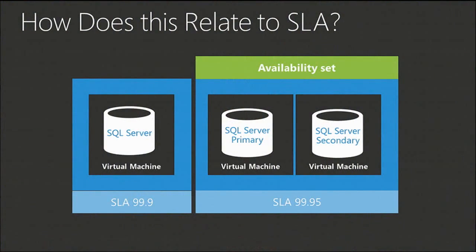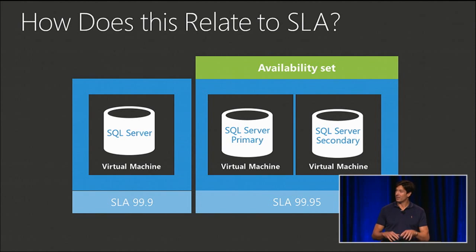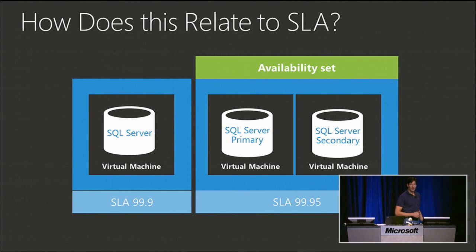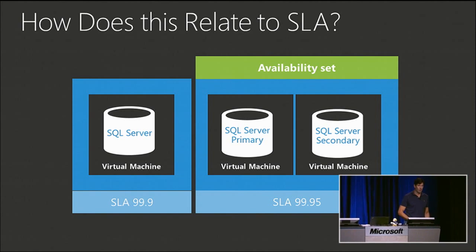For example, a single SQL server gets a 99.9% SLA. But because we support SQL mirroring — and will eventually support failover clustering — you can get a higher SLA using application-layer availability technologies. With a two-SQL-mirror setup like the SharePoint application in the keynote, you get the 99.95% SLA across those two machines.